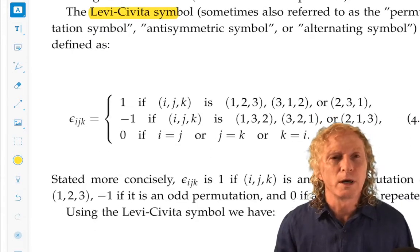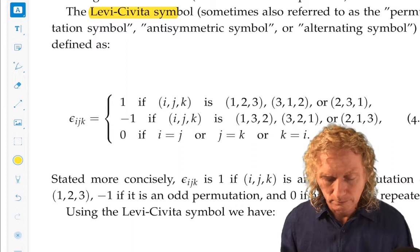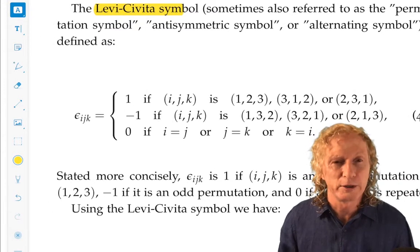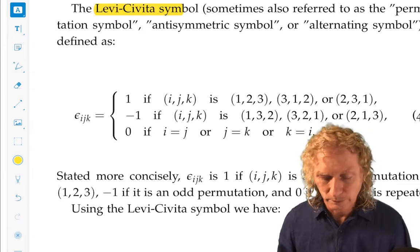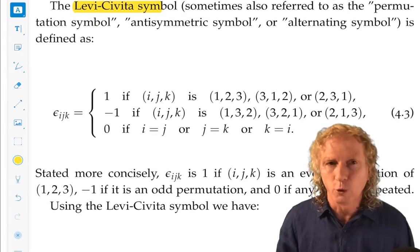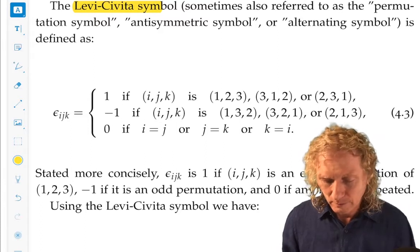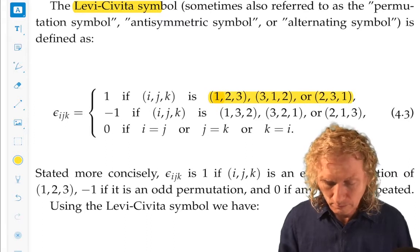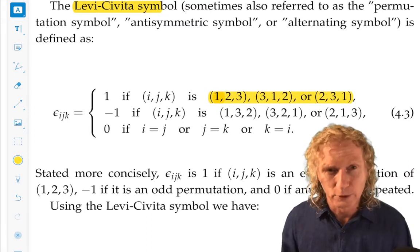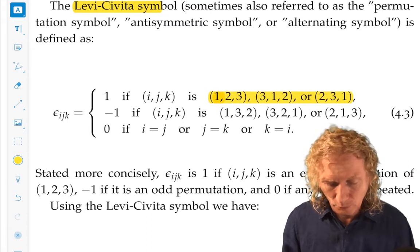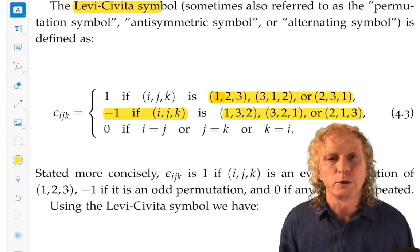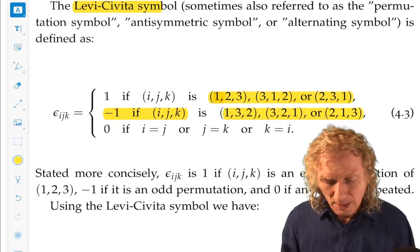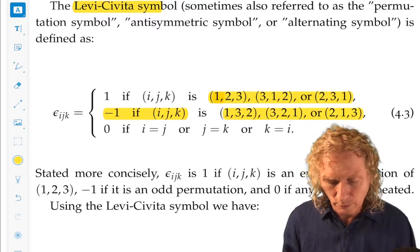So, it's either one, minus one, or zero. It's denoted epsilon sub i, j, k. Three indices when you're working in three dimensions. And it's one if i, j, k, order is important, or an even permutation of one, two, three. It's minus one if i, j, k is an odd permutation of one, two, three. And these are the three possibilities. And it's zero if any two indices are repeated.